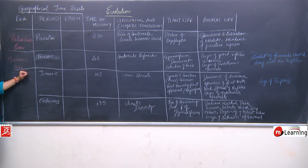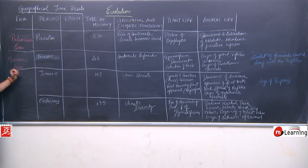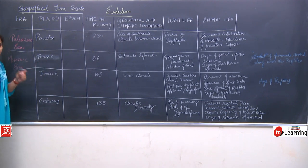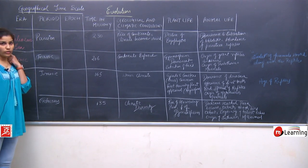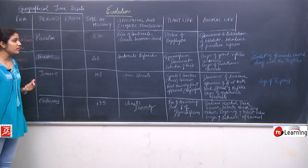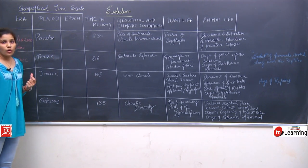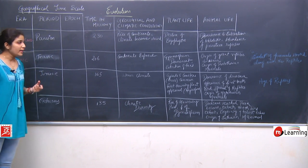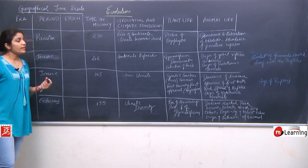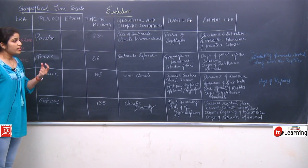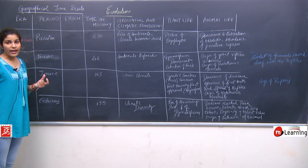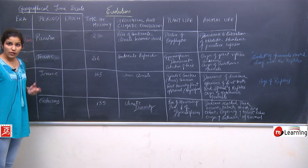The next era is the Mesozoic era. The first period is the Triassic. The Triassic period was around 206 million years ago and the continents started to be exposed and named. When we talk about plant life, gymnosperms were dominant at this time and there was extinction of the ferns.